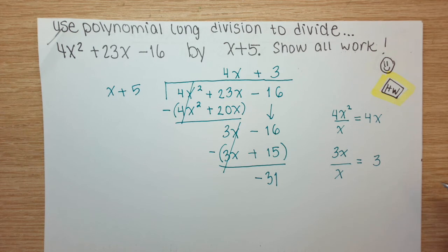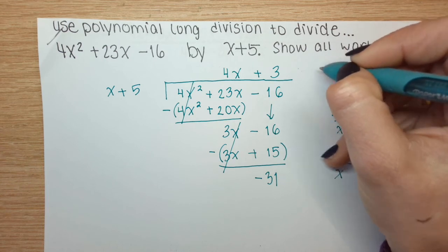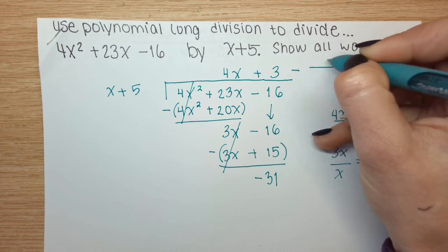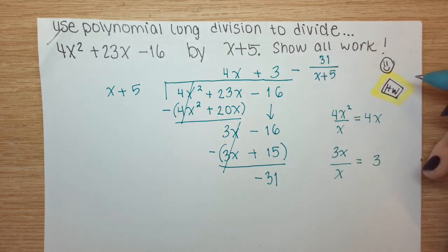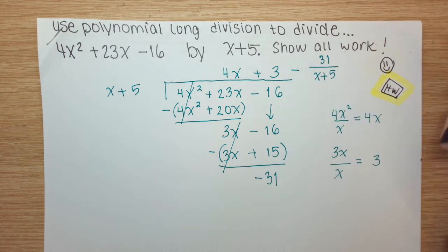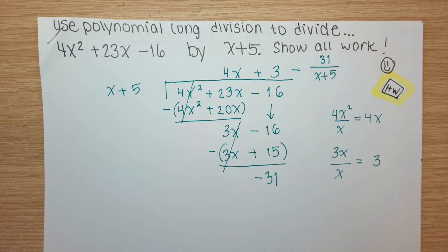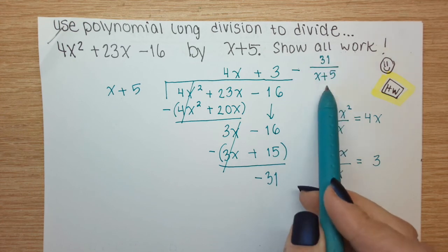The remainder is negative 31. The way we write this answer is you could write plus negative 31 over x plus 5, but instead I'm going to do minus 31 over x plus 5. I just pulled that negative out of my numerator of my remainder and sat it out front. When we have remainders that are bigger than constants, maybe a linear remainder or a quadratic remainder, you would have to factor the negative out of everything if you wanted to do something like that. Your final answer is 4x plus 3 minus 31 over x plus 5.